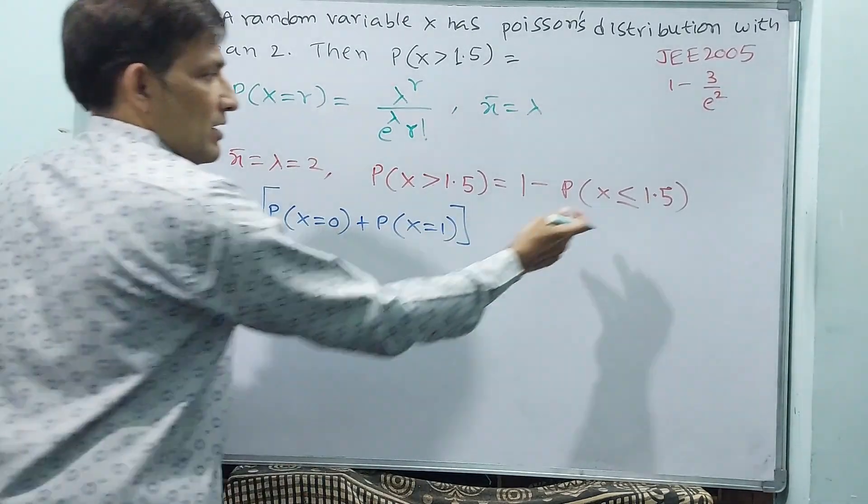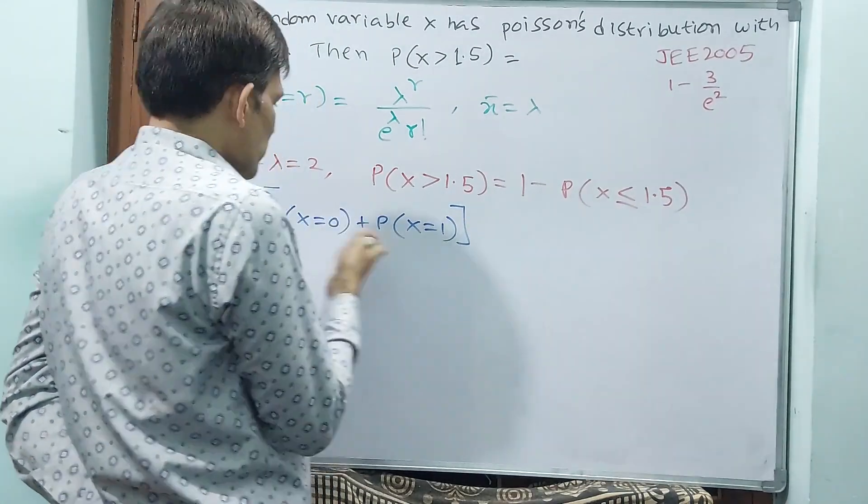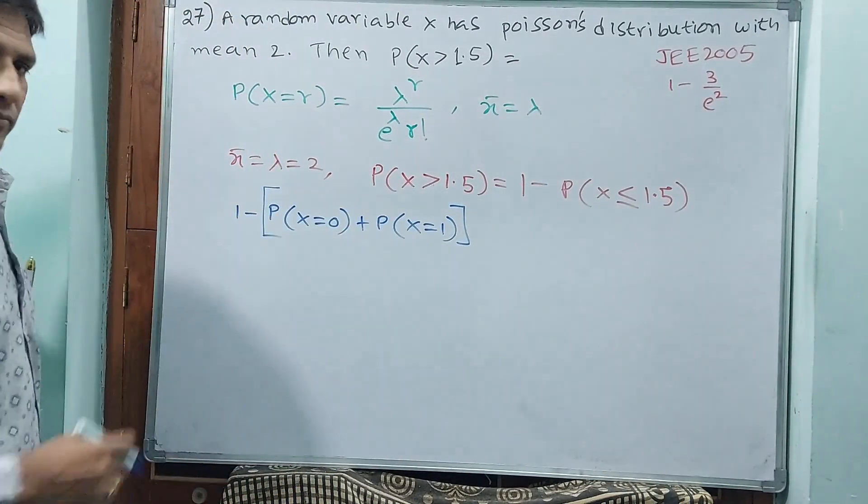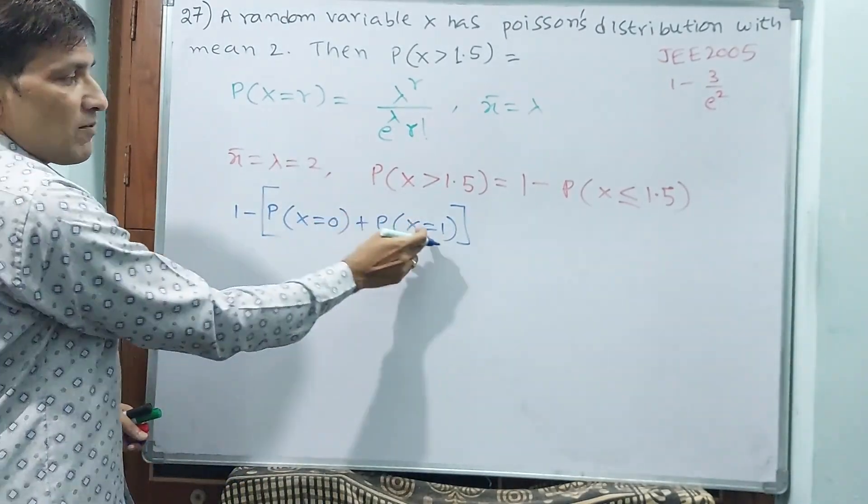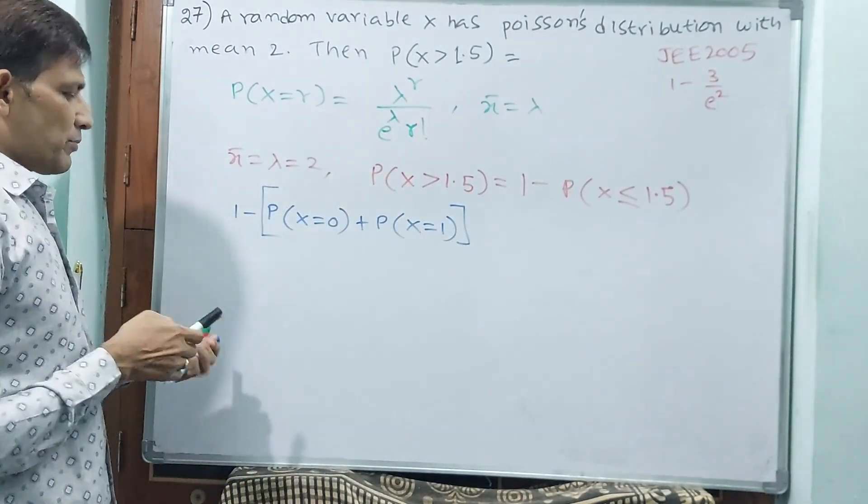Why? Because, less than 1.5 means, you will get that 0 and 1 only. Now, see here 0 and 1 are your r. Here 0 is r, here 1 is r. Now, let us proceed.